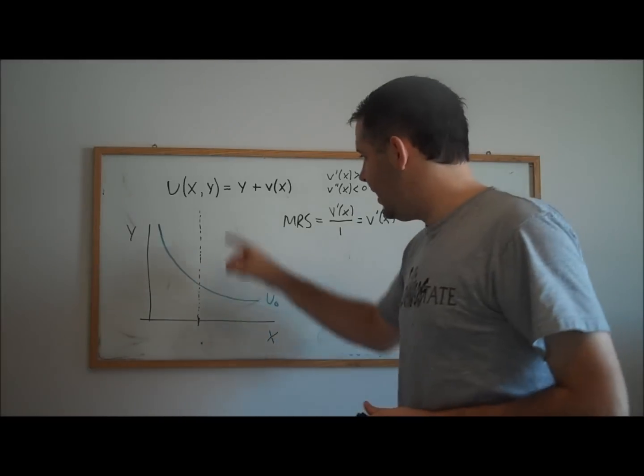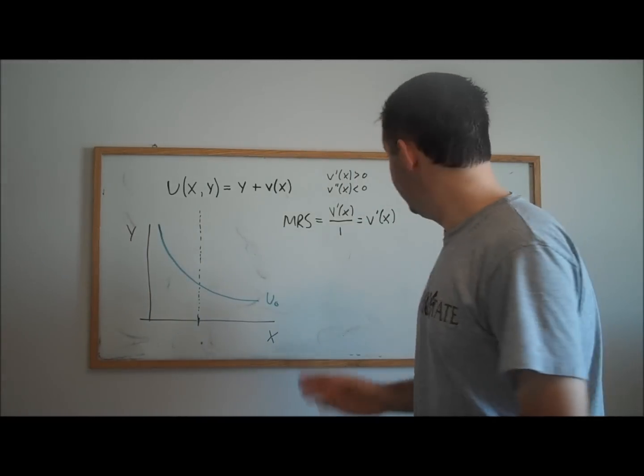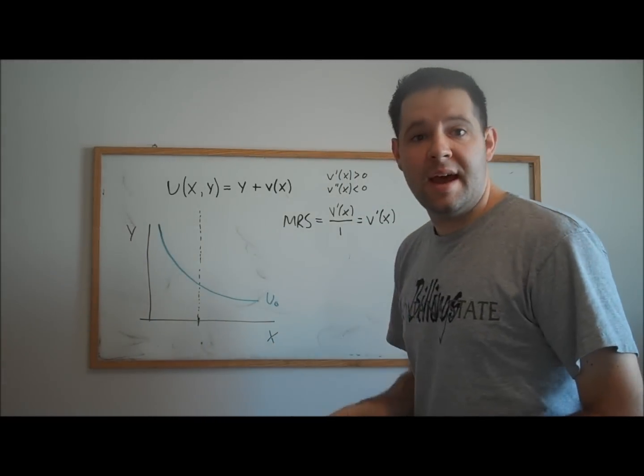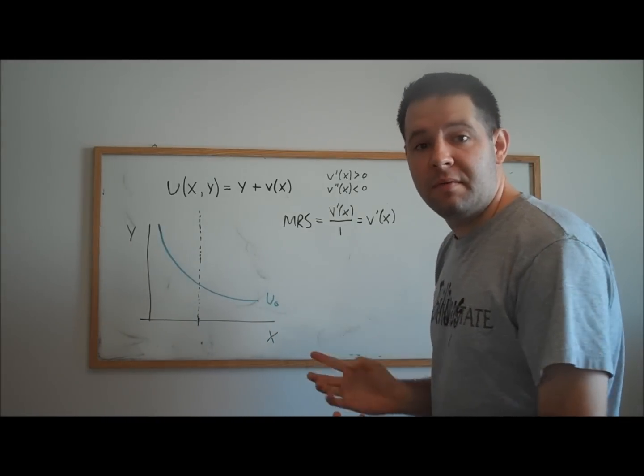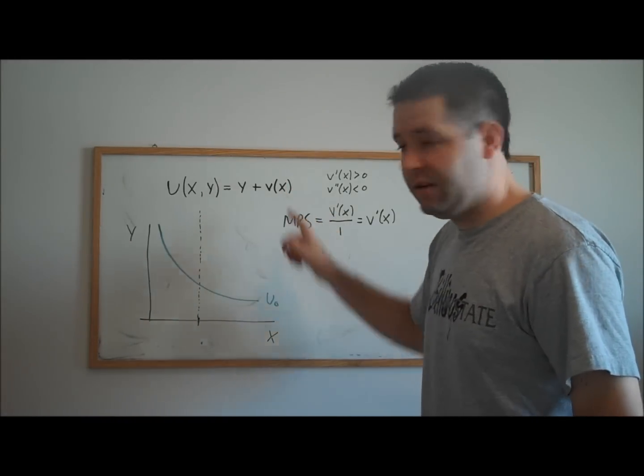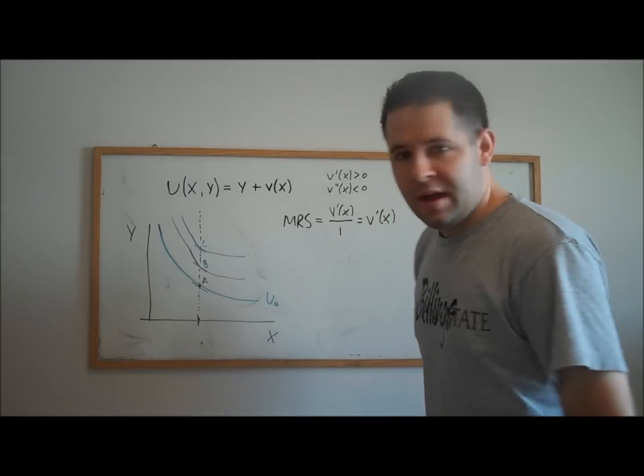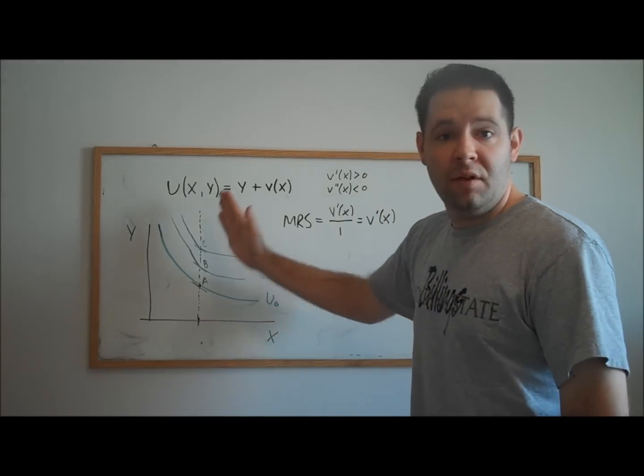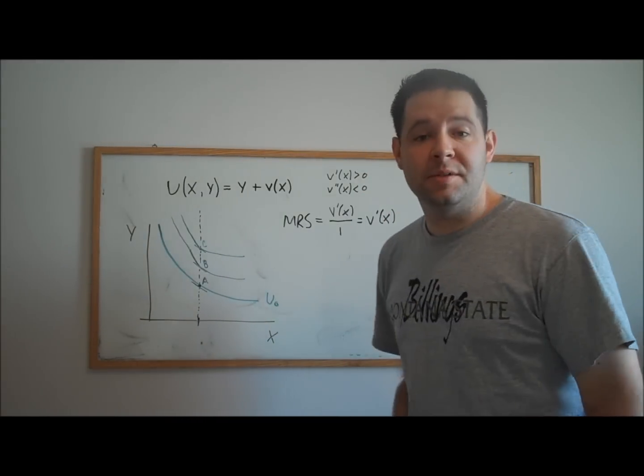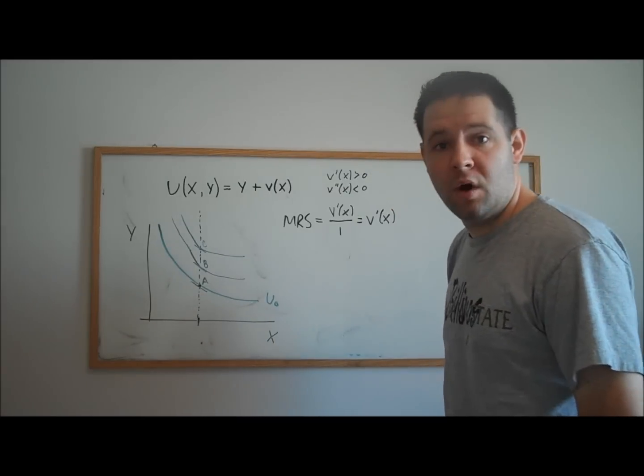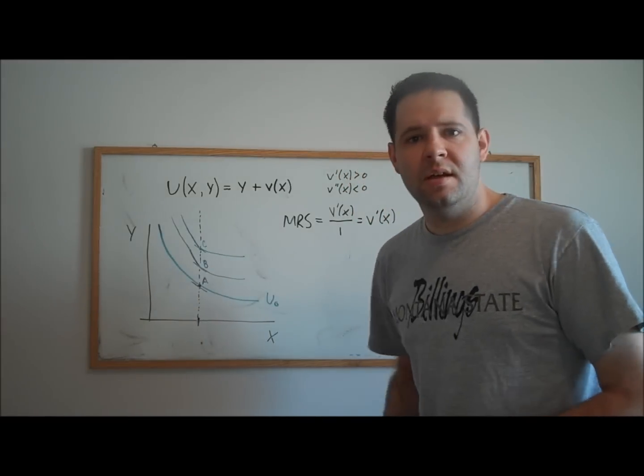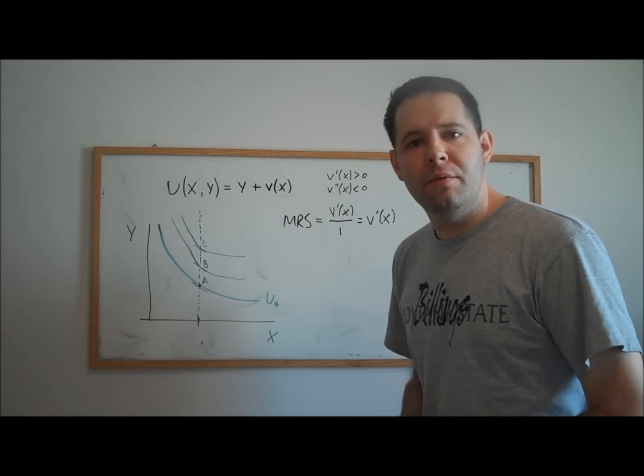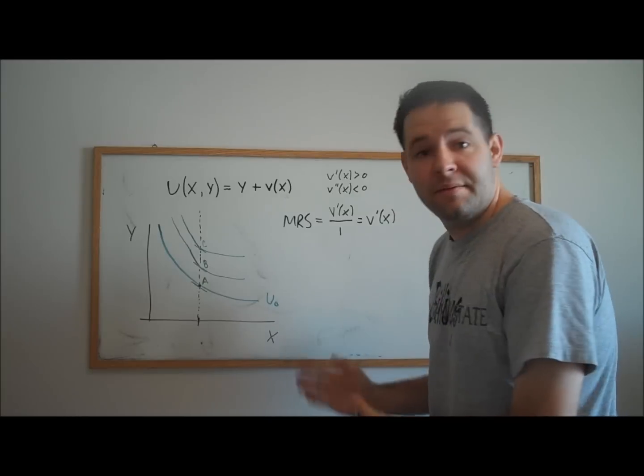You fix an x, and at any point along that vertical line, the indifference curve has to have the same slope. And that slope is going to be given by the derivative of this part of the utility function, the v of x. And this has to be true at any level of y, because the marginal rate of substitution does not depend on y. So for example, at points a, b, and c, the indifference curves going through those points are going to have the same slope.